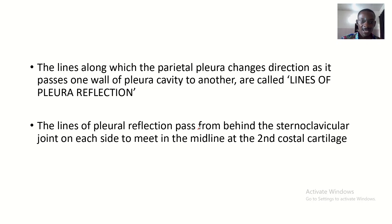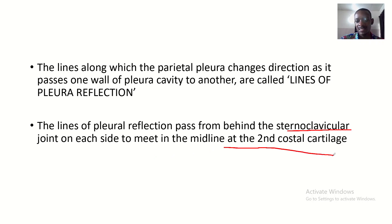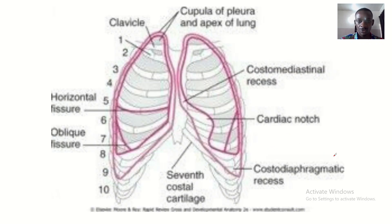The lines of pleural reflection pass from behind the sternoclavicular joints on each side to meet in the midline at the second costal cartilage.